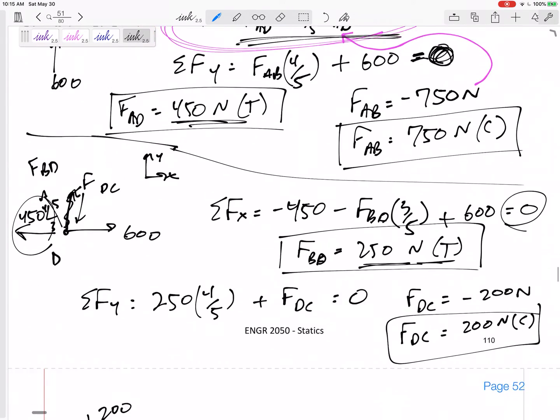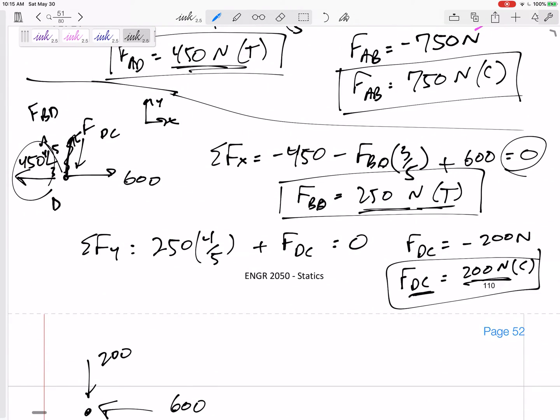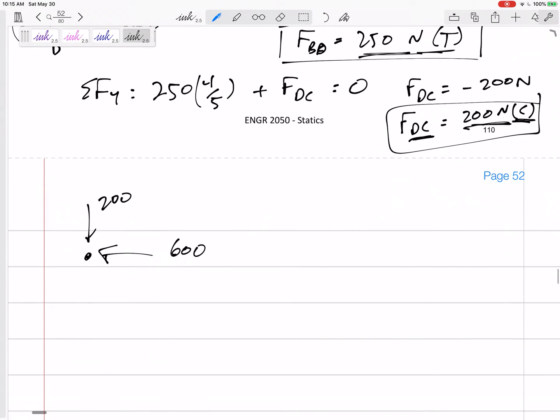I just solved for FCD. FCD is 200 compression. So, this one feels it 200 compressing right there. And then, what is this one right here? You might can just tell by looking at it.